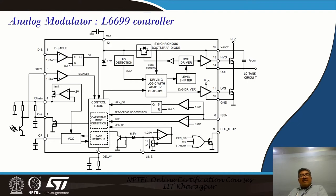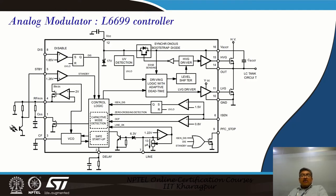When we show you the demo later on for the 2.5 kilowatt system, we have used a variant of the L6699 called the L6599, which essentially contains most of these functions. We have used this device in addition with the microcontroller to provide a CV and CC loop to design the 2500 watt light electric vehicle battery charger — using the L6599 with some tricks and added logic as a mix of microcontroller and analog modulator to realize a 2.5 kilowatt converter.